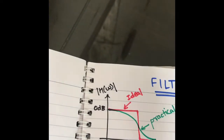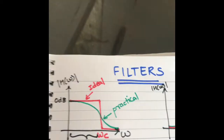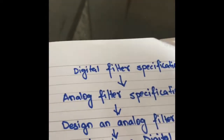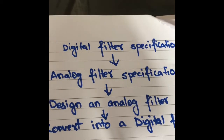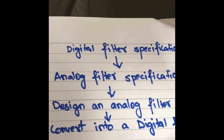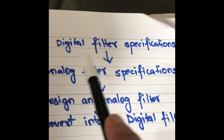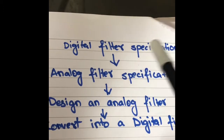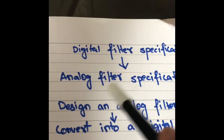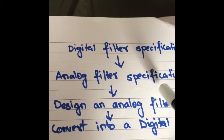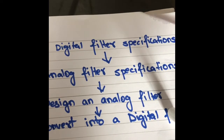Specifications such as gain in the stop band, cutoff frequency, pass band edge frequency, and stop band edge frequency allow you to customize your filter. The first step is converting those digital filter specifications into analog filter specifications. Then, using those analog filter specifications, we design an analog filter.